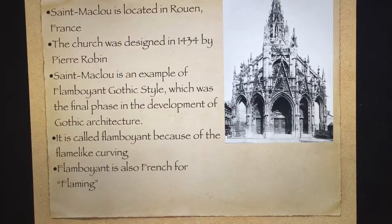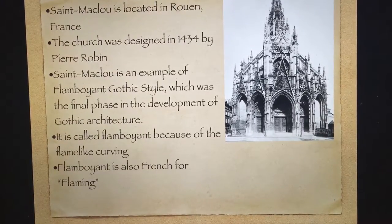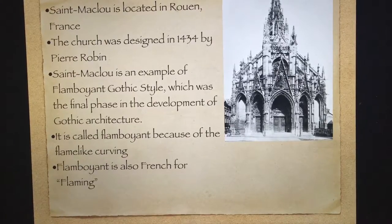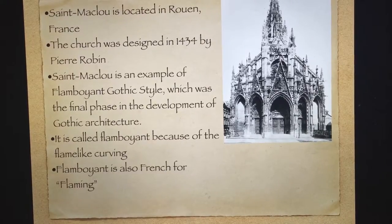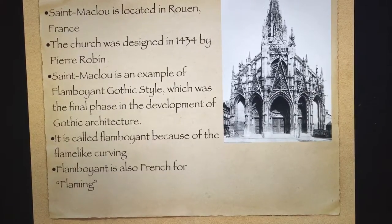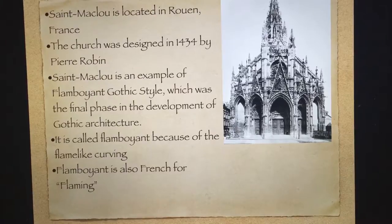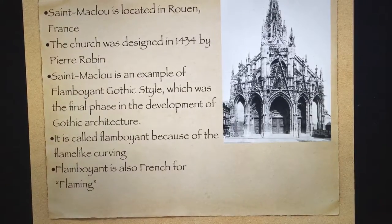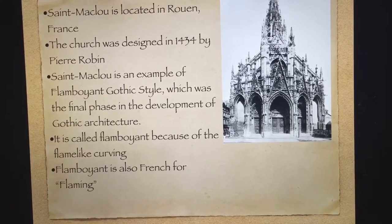Saint Maclou is located in Rouen, France. The church was designed in 1434 by Pierre Robin. Saint Maclou is an example of flamboyant Gothic style, which was the final phase in the development of Gothic architecture. It is called flamboyant because of the flame-like carvings — flamboyant is also French for flaming.